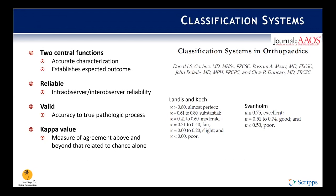First, accurate classification characterizes the nature of a problem and then guides treatment decision making, ultimately improving outcomes. Second, accurate classification establishes an expected outcome for the natural history of a condition or injury, thus forming a basis for the uniform reporting of results for both surgical and non-surgical treatments. This allows for comparison of results from different centers purportedly treating the same entity.